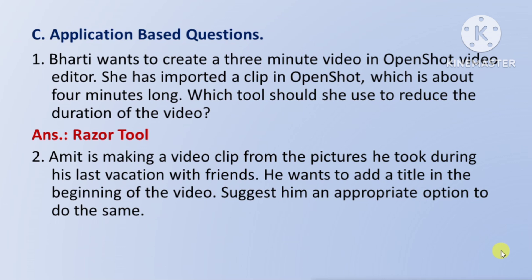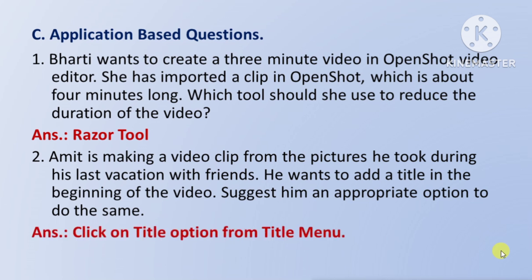Amit ek video clip bana raha hai pictures se, aur un pictures ko usne capture kiya tha apne last vacation ke dauran. He wants to add a title in the beginning of the video — aur wo video ki beginning mein title add karna chahta hai. Suggest him an appropriate option to do the same — to is kaam ko karne ke liye iska answer hoga: click on the Title option from the Title menu — title menu se title option par click karen aur use ek madhyam se title add kar le.